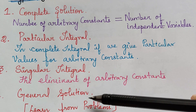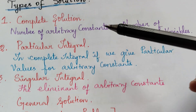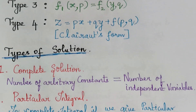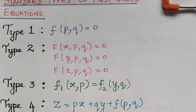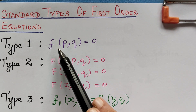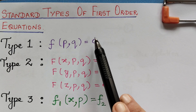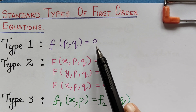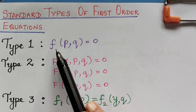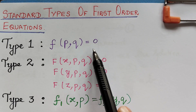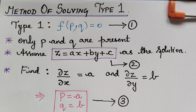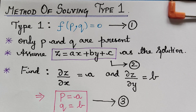Now, in this lecture we will be learning about type 1, which is f of p, q. First, we will see the method of solving the equation f of p, q is equal to 0. Here we have the method of solving the type 1 equation.